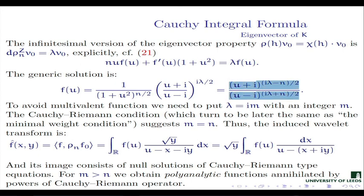If you apply that operator several times, it will annihilate functions with higher value of m. And that, by the previous theorem, tells you that the image will consist not of analytic functions annihilated by the Cauchy-Riemann operator, but of functions annihilated by some power of the Cauchy-Riemann operator — not first order but some higher power. Such functions are called polyanalytic: if a function is annihilated by the n-th power of the Cauchy-Riemann operator, it is called a polyanalytic function of order n.